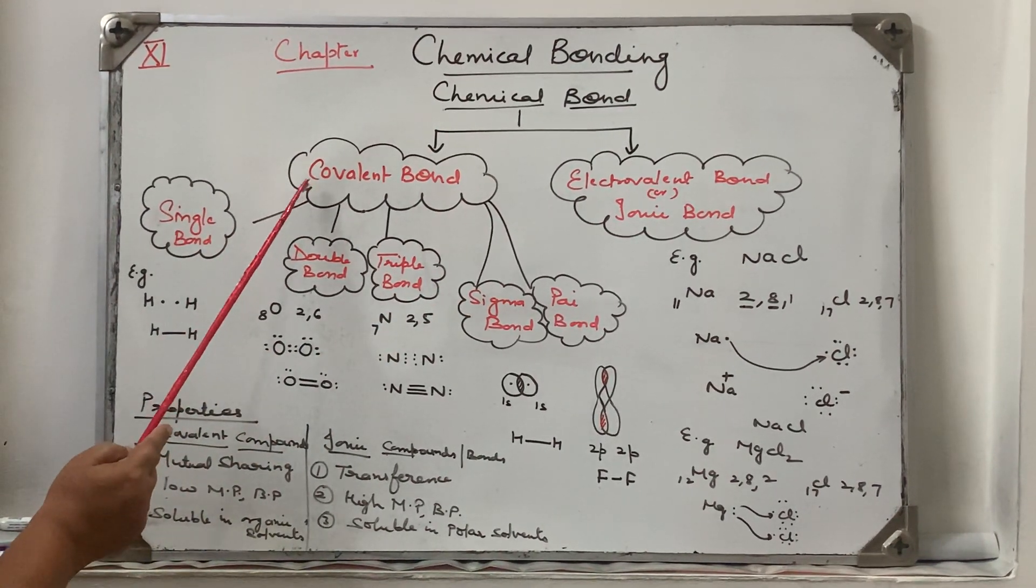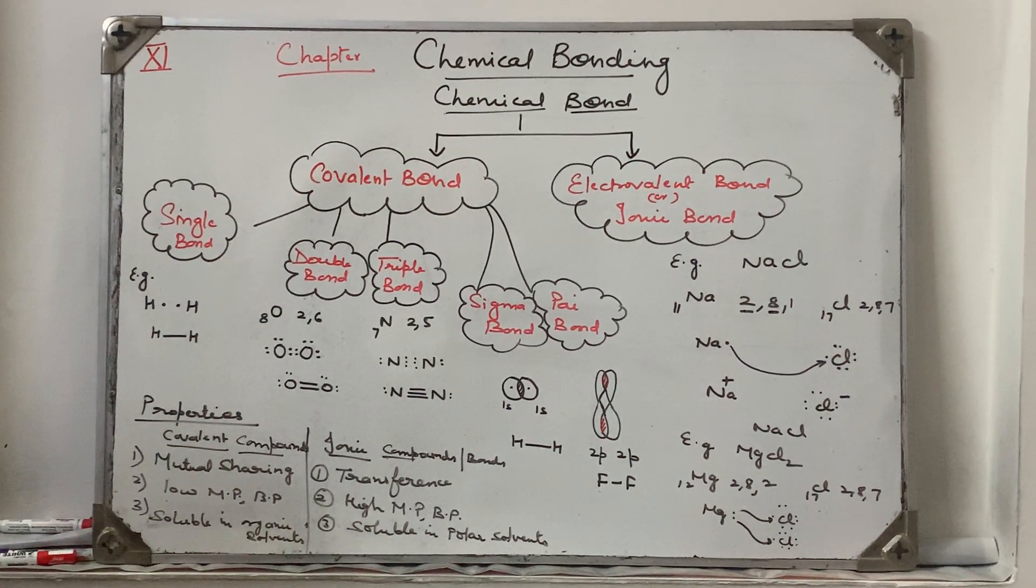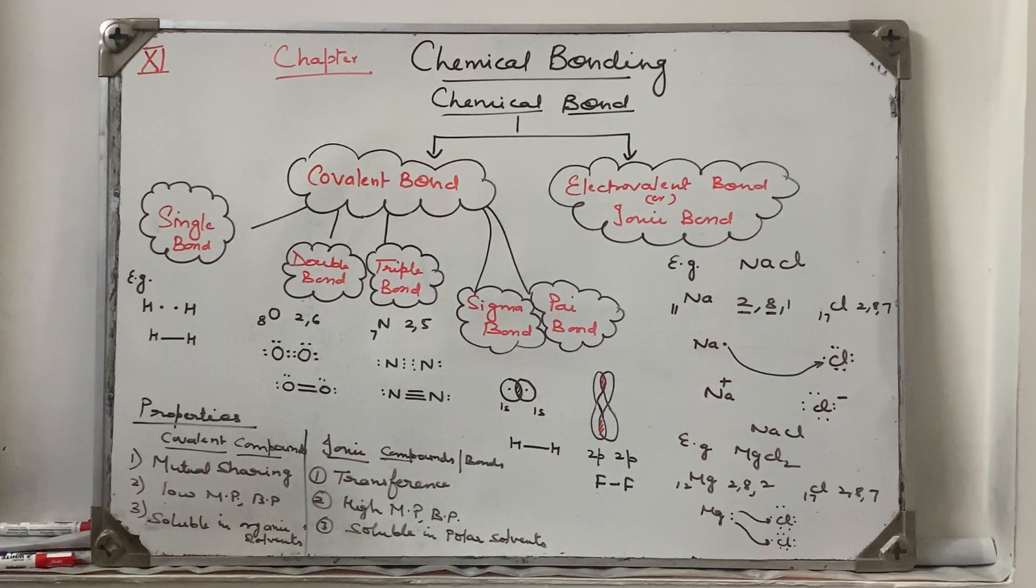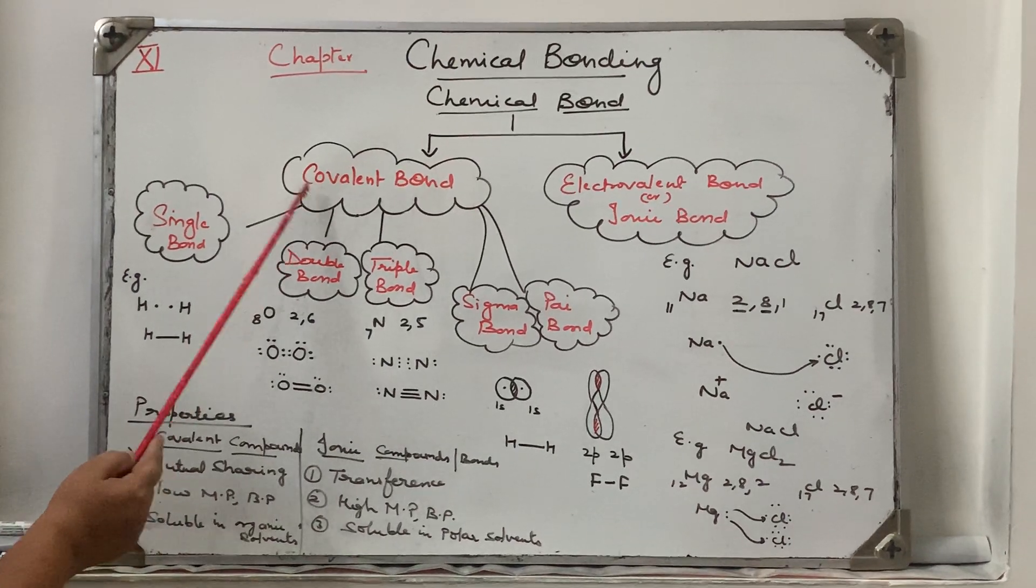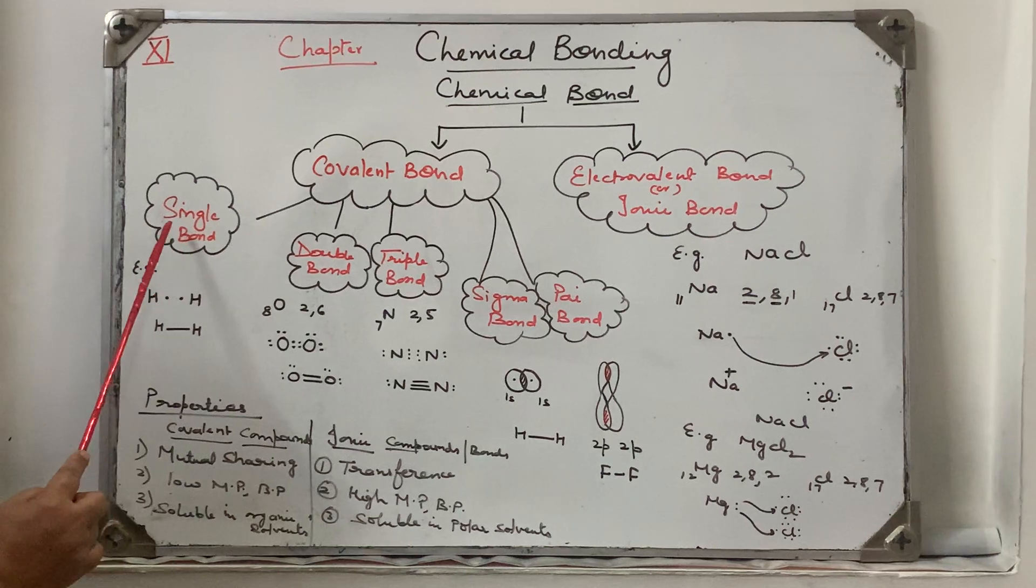So how many types of chemical bonds are there? One is covalent, another is electrovalent or ionic bond. First of all, we will discuss about the covalent bond. This is formed by the mutual sharing of electrons. The covalent bond can be of many types: single bond, double bond, triple bond.